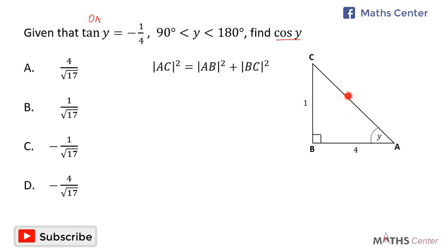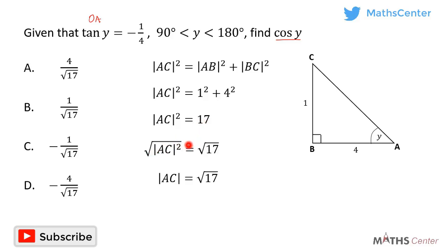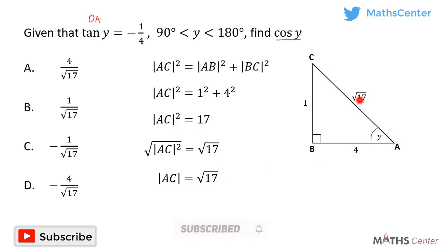Using the Pythagorean theorem: AC² equals AB² plus BC². AB is 4 and BC is 1, so AC² equals 4² plus 1², which gives 16 plus 1 equals 17. Taking the square root of both sides, AC equals the square root of 17.